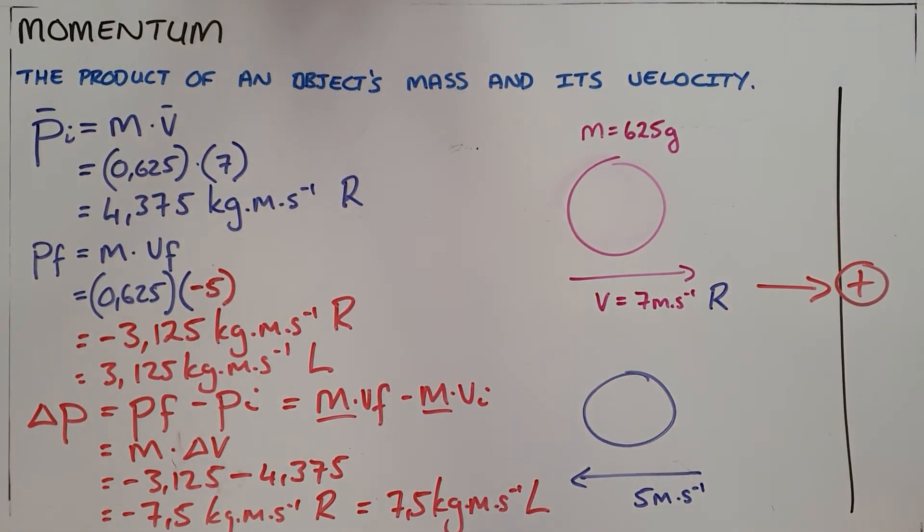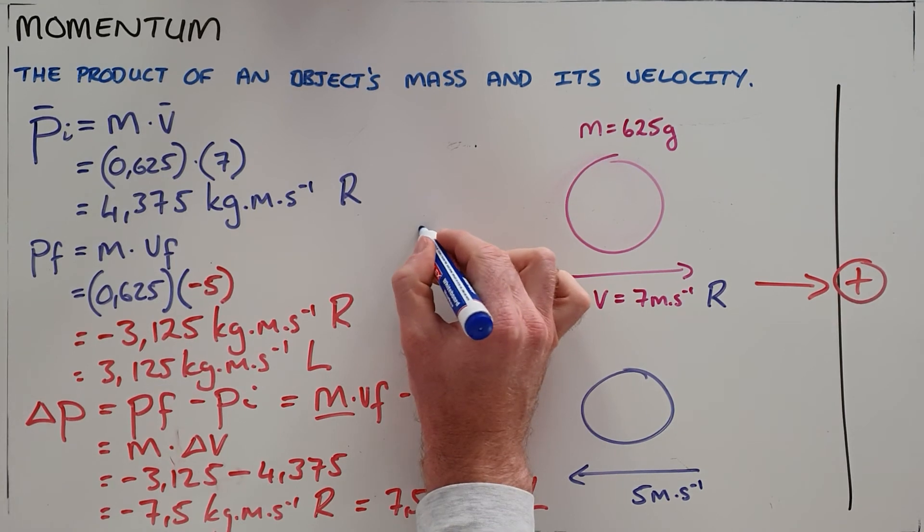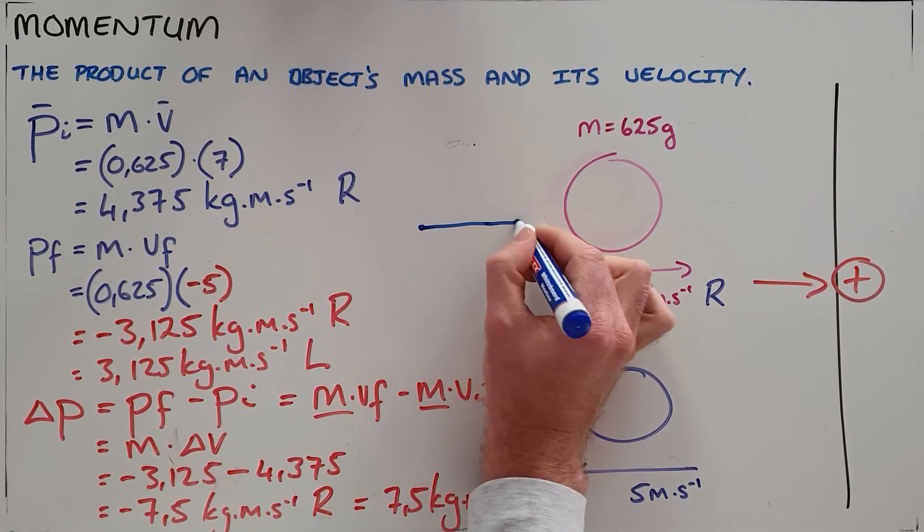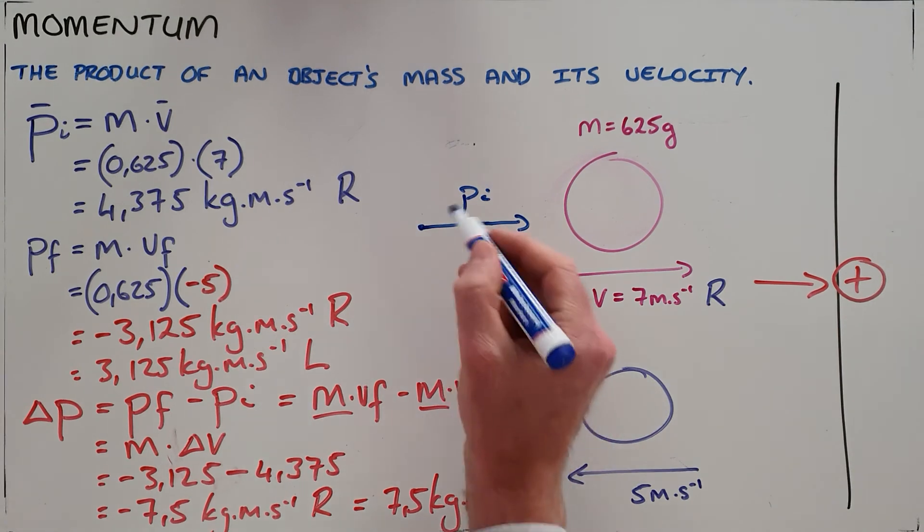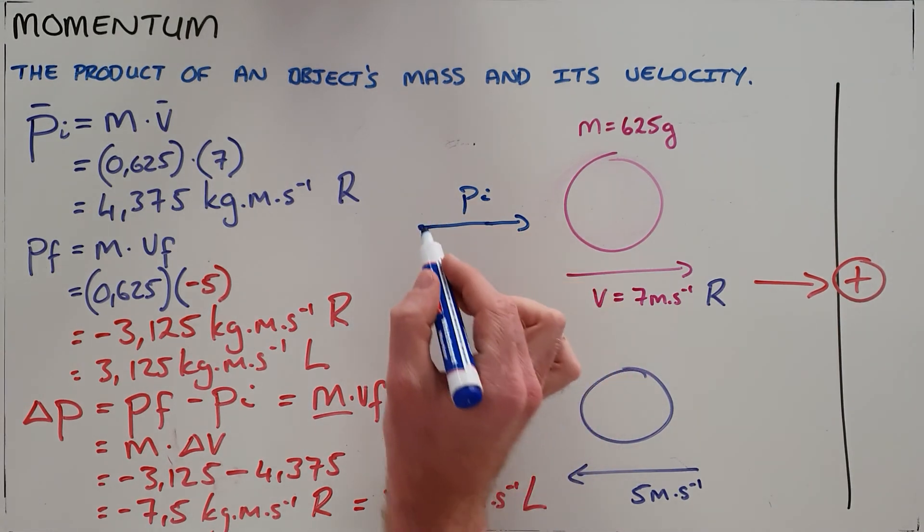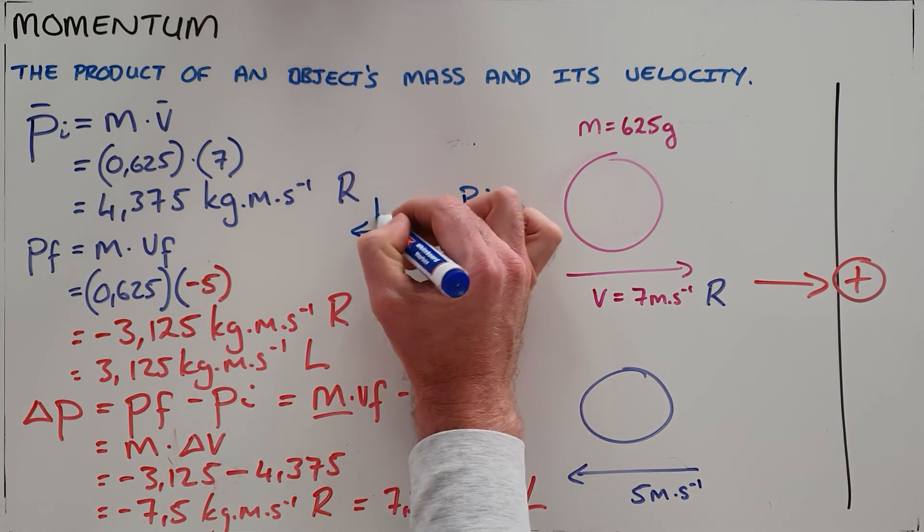This can be illustrated in the form of a vector diagram, which just shows the initial vector, which is our initial momentum here, which was to the right. But we then draw our final momentum, which was in the opposite direction, that being to the left.